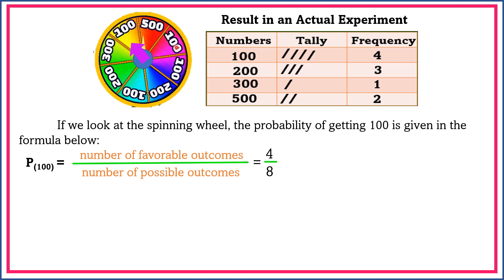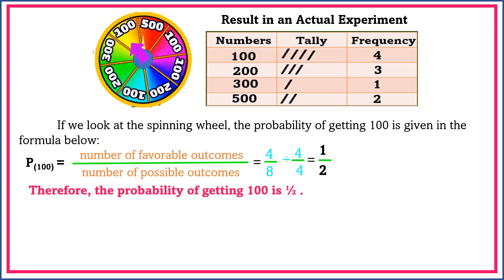Counting the 8 elements: 1, 2, 3, 4, 5, 6, 7, 8. So, 4 over 8 can be reduced to its lowest term by dividing both numerator and denominator by 4. So, 4 divided by 4 is equal to 1, and 8 divided by 4 is equal to 2. Therefore, the probability of getting 100 is 1 half.